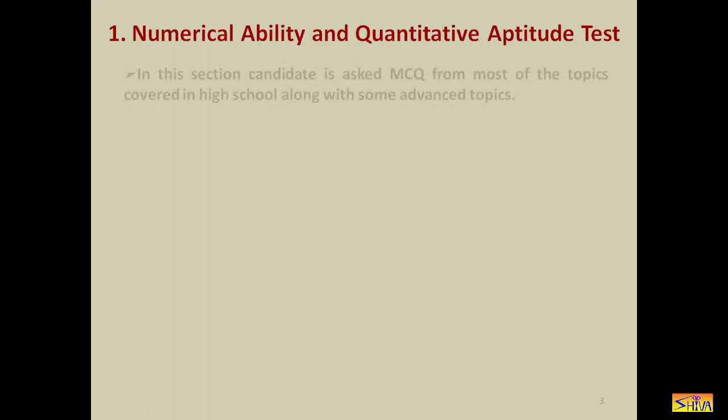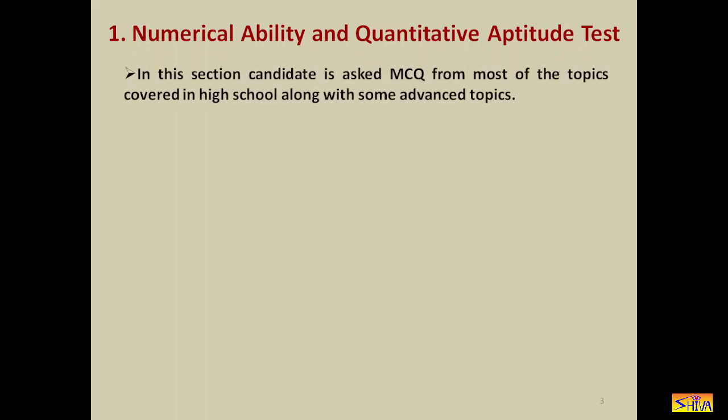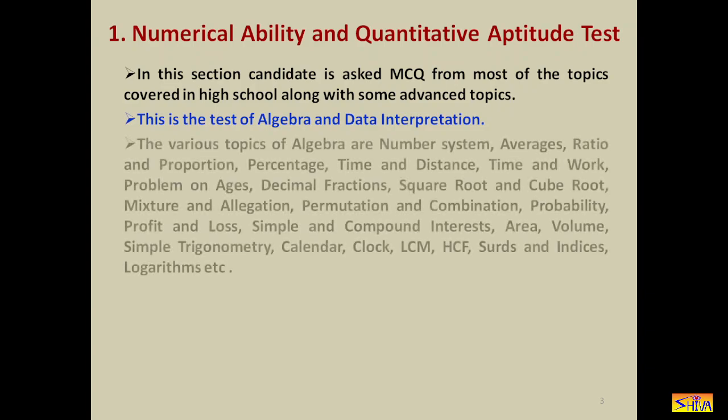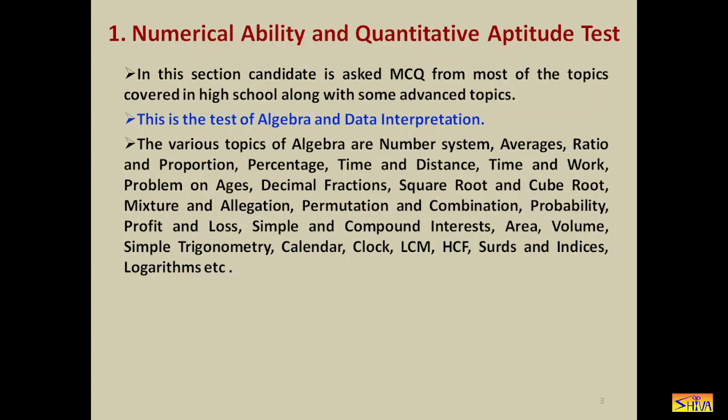In the numerical ability section, candidates are asked multiple choice questions from most topics covered in high school along with some advanced topics. This is a test of algebra and data interpretation. Topics of algebra include: number system, averages, ratio and proportion, percentage, time and distance, time and work, problems on ages, decimal fractions, square root and cube root, mixture and allegation, permutation and combination, probability, profit and loss, and simple and compound interest.